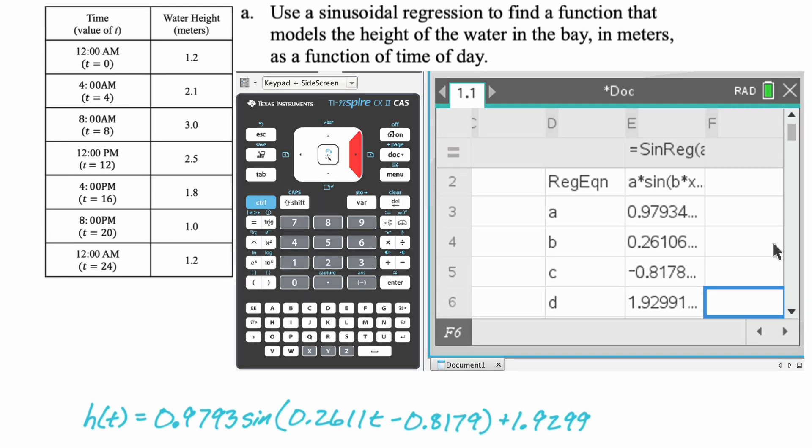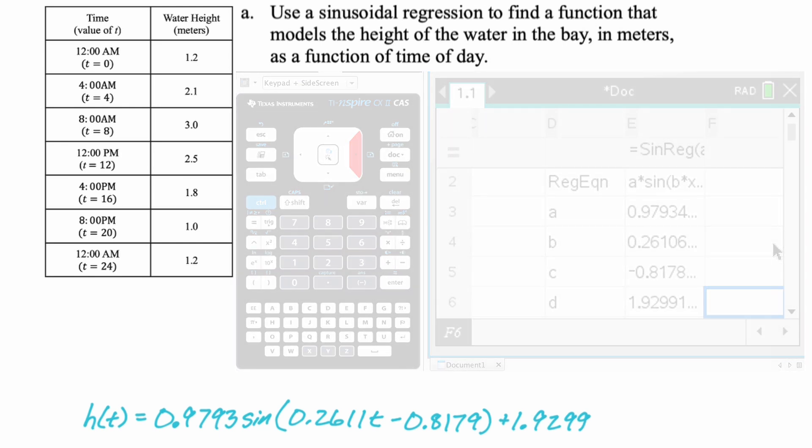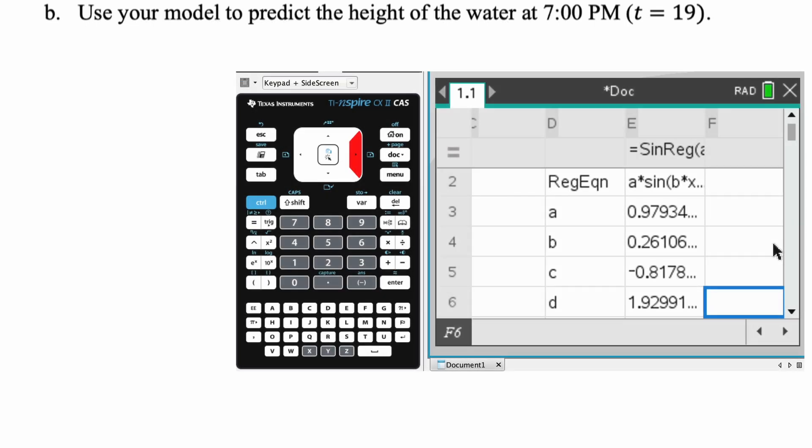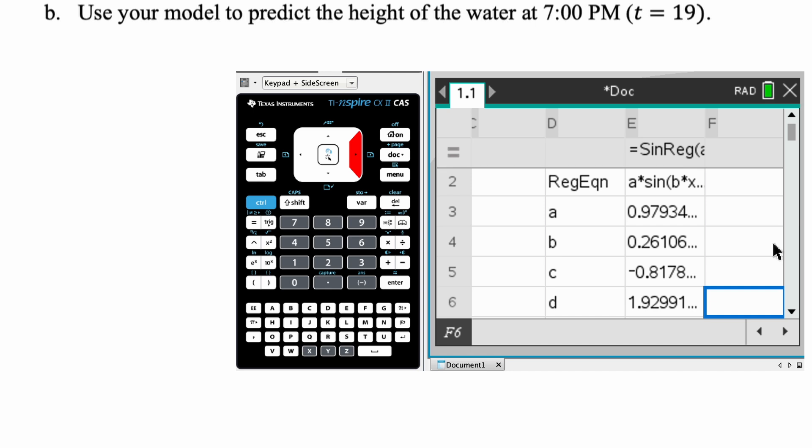Okay. Let's take a look at the next part. So use your model to predict the height of the water at 7 p.m., which is T equals 19. So I'm going to switch over to the Inspire, show you, I guess, two ways that you can do that. One of them is on the graph, and one of them is just on a calculator page. Let's do that. And then we will jot down the answer, and then we will move on to the next part.